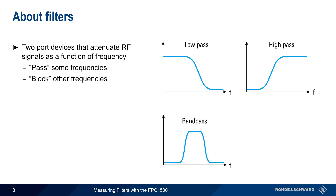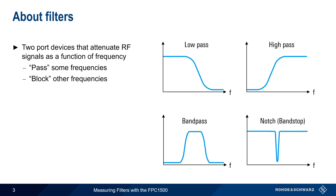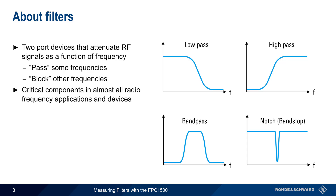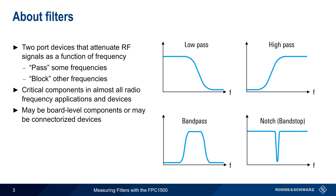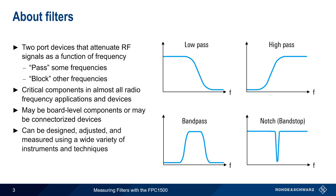A band pass filter passes only signals within a certain frequency range, or band. And a notch, or band stop filter, is used to block a frequency range. Filters are critical components in almost all radio frequency applications, and may be either board level components or external connectorized devices. There are many different instruments and techniques that can be used to design, adjust, and measure filters, and in this presentation we'll show how this is done with the FPC-1500.